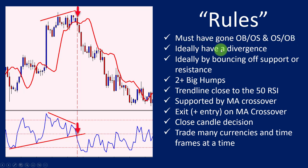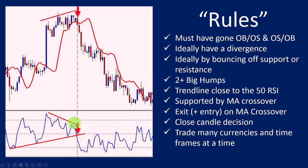Ideally there should be a divergence that accompanies the signal. A divergence is when you draw a line over the tops of the candles on the chart, and then draw a line over the tops of the turning points on the RSI — and these lines diverge: one is going up while the other is going down. The momentum indicator is saying the move is running out of momentum. That's what a divergence is — it's a signal that there's going to be a trend change.